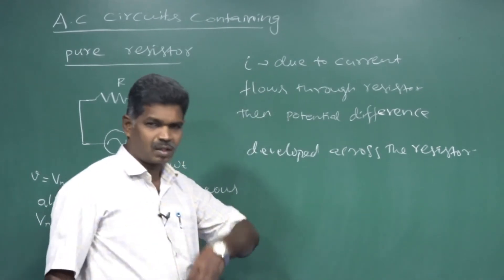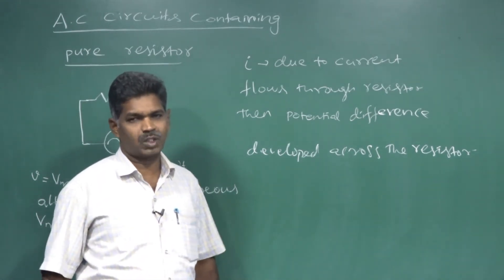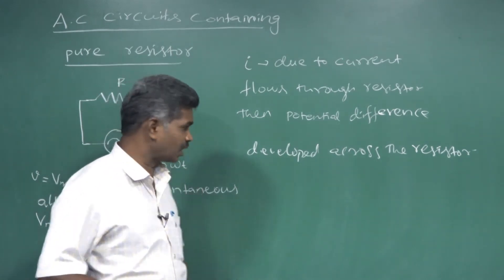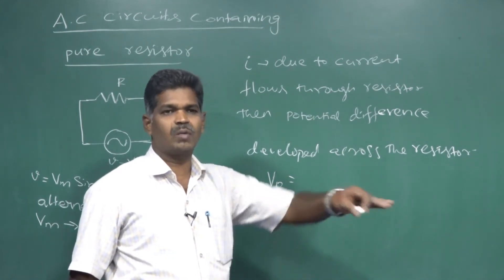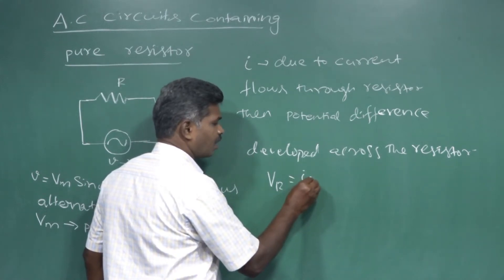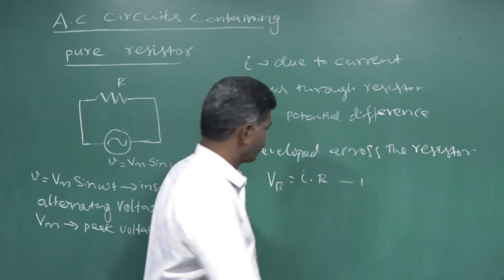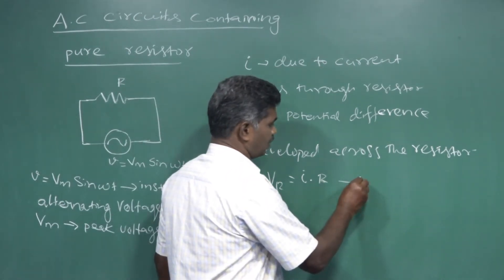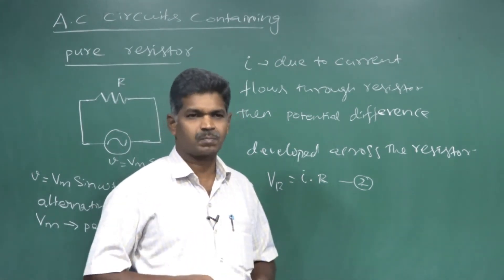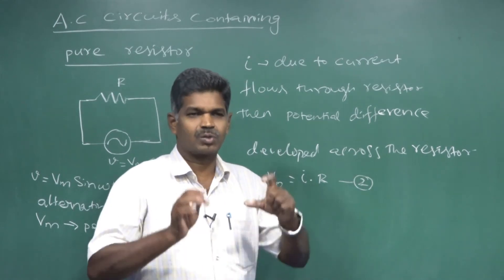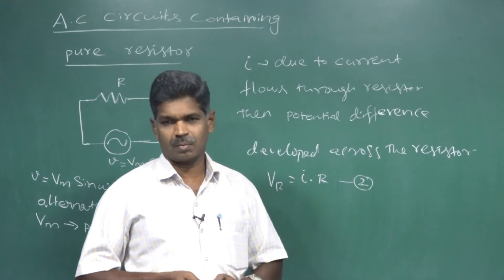The potential difference developed across the resistor can be given by Ohm's law. The formula is V = IR. So the voltage developed across the resistor is VR = I × R. This is our second equation. The first equation is the instantaneous EMF, and this is the voltage developed across the resistor.